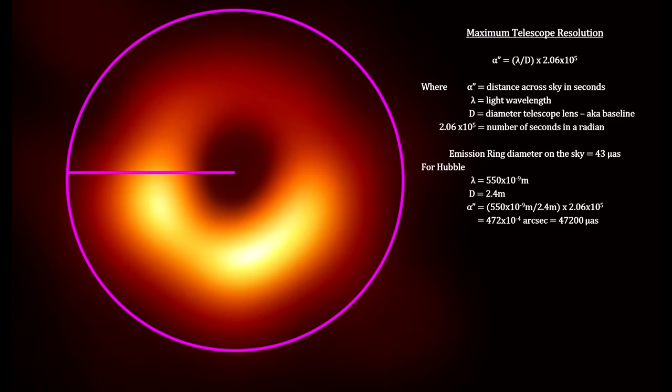The 2.4-meter Hubble Space Telescope has the resolving power to see down close to 50 milli-arc seconds. The M87 black hole is over a thousand times too small for Hubble to see.